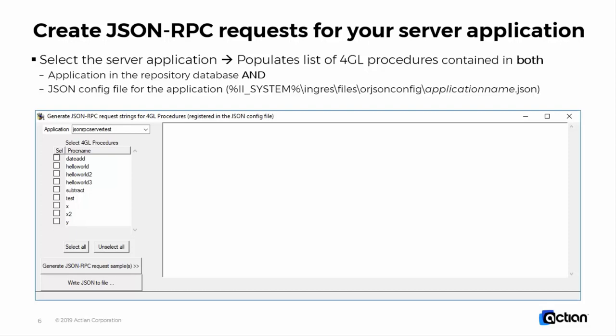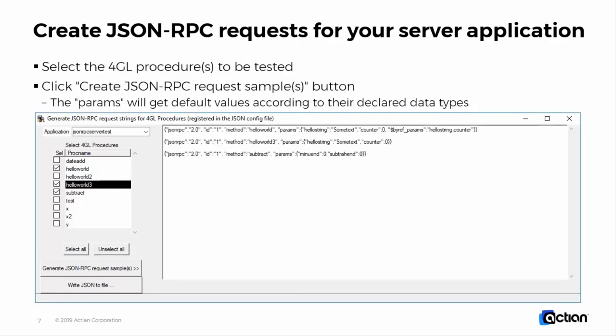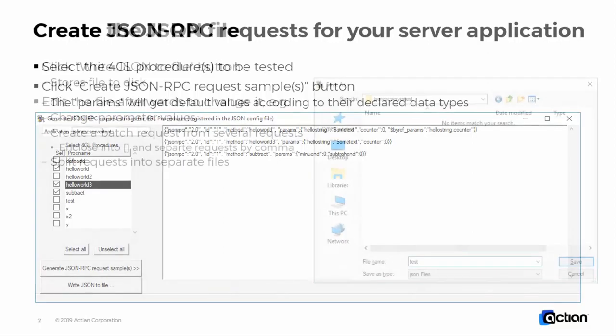Then you can select the 4GL procedures for which a sample request should be generated. The parameters for the 4GL procedure calls will get default values according to their declared data types. For instance, for numeric types like integer or float, the value will be zero, and for a string — a varchar string, for instance — it will have some value of some text.